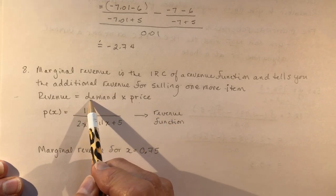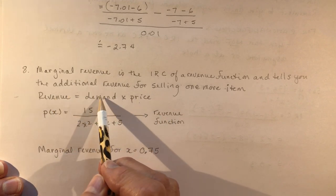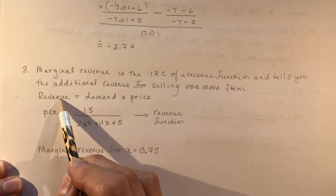Okay, so demand, if we have 100 people want to buy it at this price, that's my revenue. So say it was 100 people for $2, my revenue was $200.